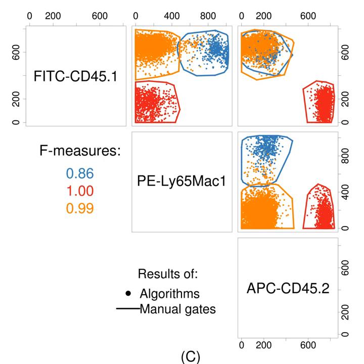An attempt to solve this problem is the development of the Gating ML XML-based data standard, discussed in more detail under the standards section, which is slowly being adopted in both commercial and open source flow cytometry software. The Cytomilar package is also filling the gap by importing and exporting Gating ML that is compatible with FlowJo, Cytobank and FACS-Diva softwares.